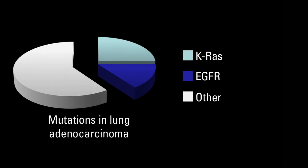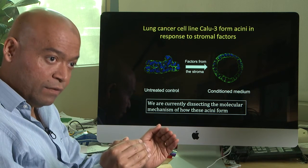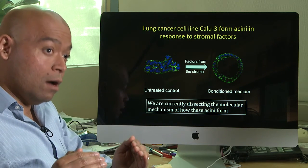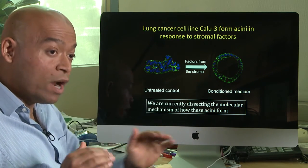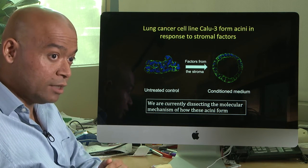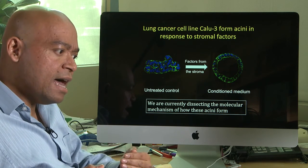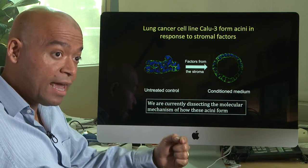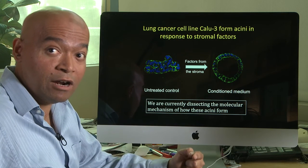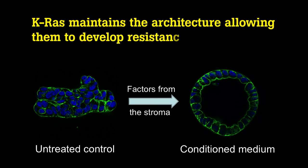There is a key difference between expressing the activated KRAS oncogene versus the EGFR oncogene: KRAS does not disrupt the architecture, whereas EGFR does disrupt it. In a somewhat paradoxical way, this suggests a possible mechanism for why KRAS-induced lung cancers frequently become resistant to chemotherapy — because KRAS still maintains the architecture, allowing resistance to develop more readily.